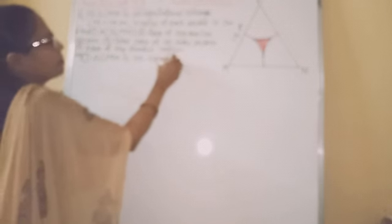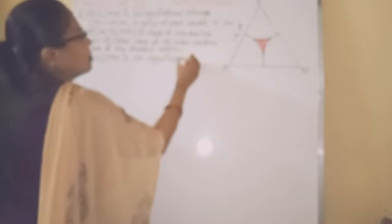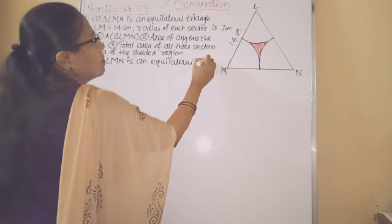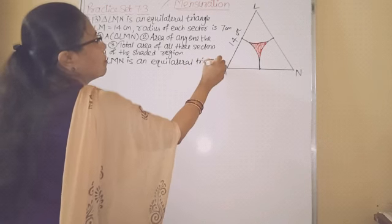Okay, so let us find out first one. Triangle LMN is an equilateral triangle with side 14 cm.